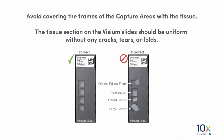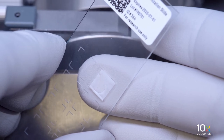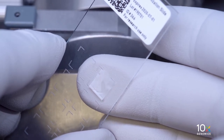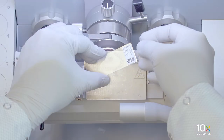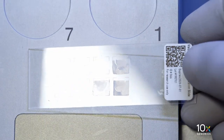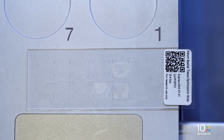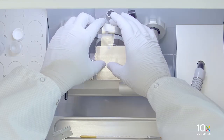Avoid covering the frames of the capture areas with the tissue. The tissue section on the Visium slides should be uniform without any cracks, tears, or folds. Immediately place a finger on the back of the capture area of the slide for a few seconds. This will allow the section to adhere to the slide. Ensure that the entire tissue section is fully adhered to the slide and the slide is inside the cryostat chamber throughout the section placement. Immediately place the slide with the tissue section on the cryobar to freeze the section. Do not remove the slide from the cryostat chamber at any point during sectioning and tissue placement.